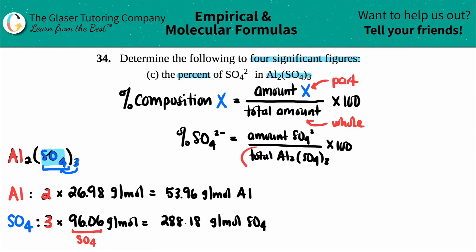Now I have to find the total amount. I have to add these two numbers up. That's the total molar mass of aluminum sulfate, Al₂(SO₄)₃. I'll take 288.18 and add it to 53.96. So my total is 342.14 grams per mole, and that's the total.